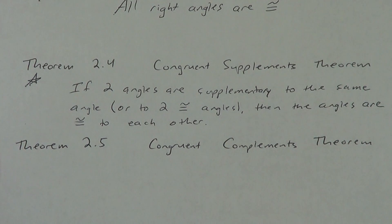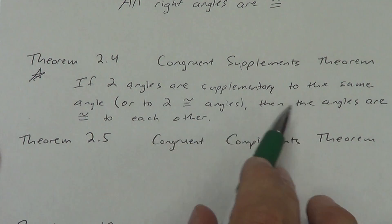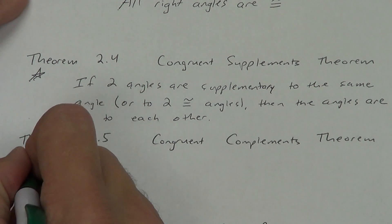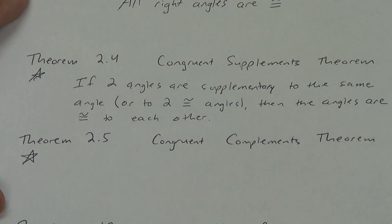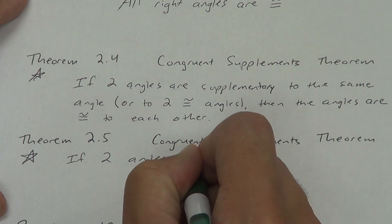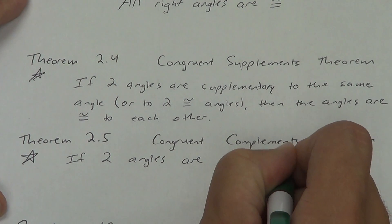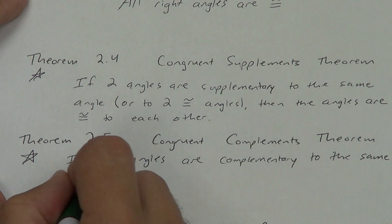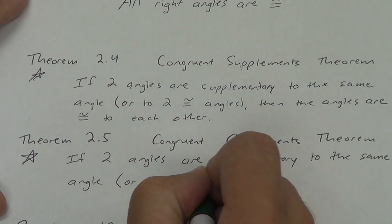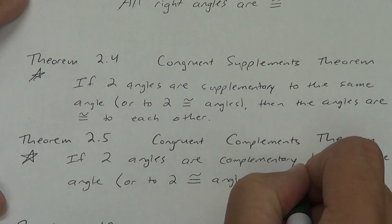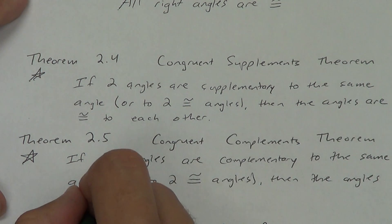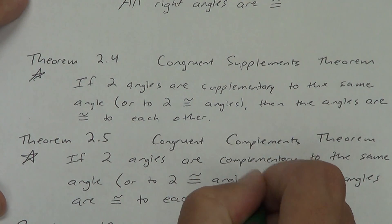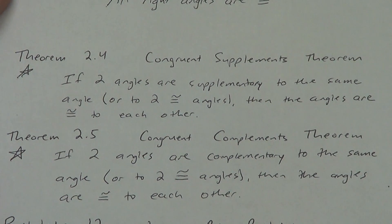Theorem 2.5 is the Congruent Complements Theorem — basically the exact same thing, except we replace the word supplementary with complementary. It's also just a one-star theorem. If two angles are complementary to the same angle, or to two congruent angles, then the angles are congruent to each other. So if angle P and angle Q are both complementary to angle W, then angle P and Q have to be congruent to each other.